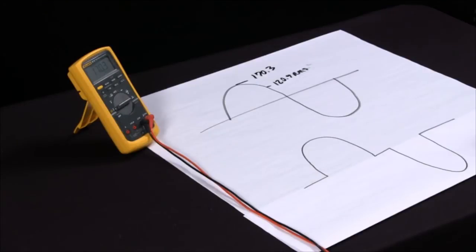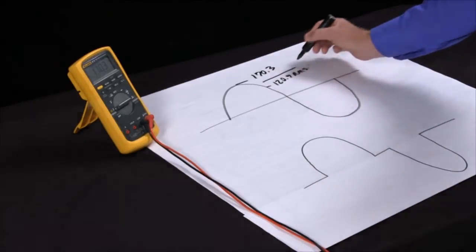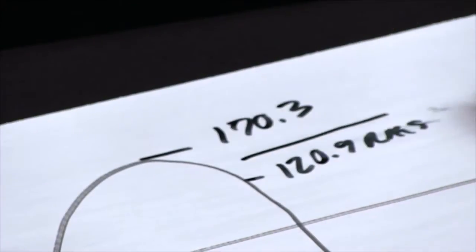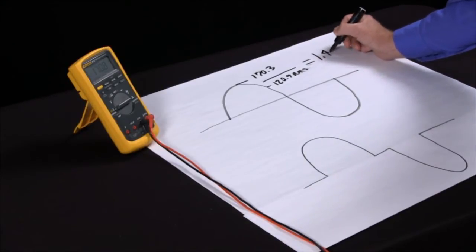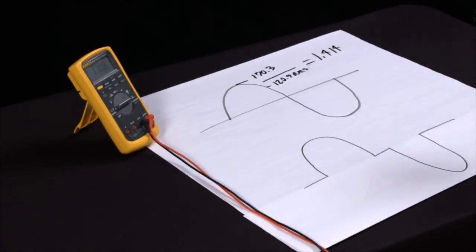Now there's something called the Crest factor, which if I divide the RMS into the peak on a nice clean sine wave, this should come to 1.414. Now we can all divide 120.9 into 170.3 and come up with 1.414.